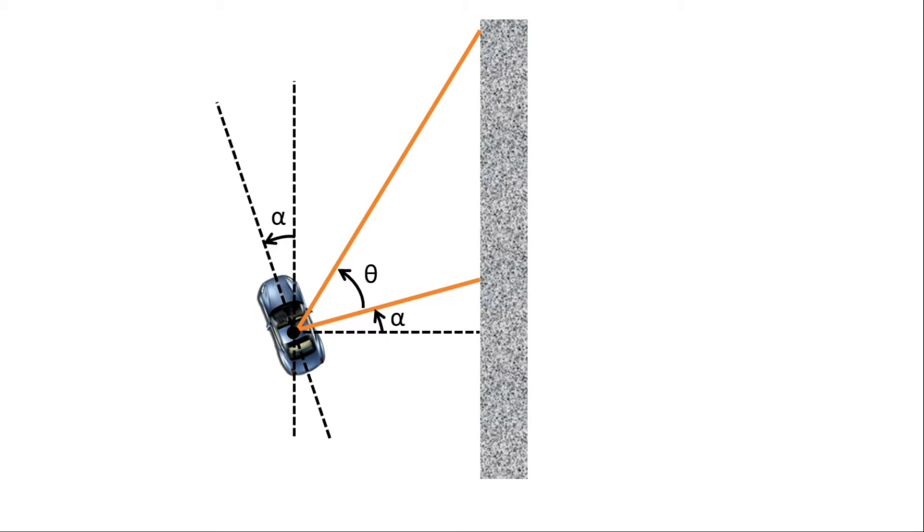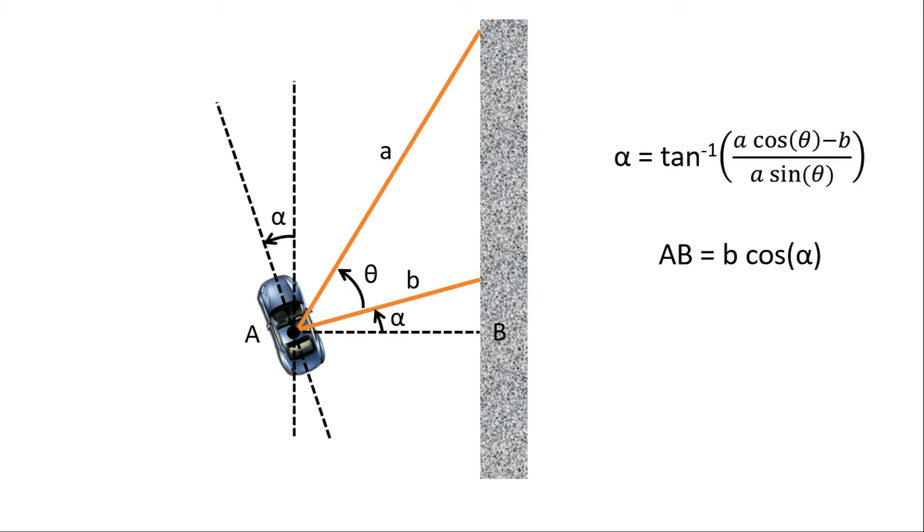Let alpha be the orientation of the car with respect to the wall. The LADAR scans are also rotated by an angle alpha. By solving the geometric problem, we can establish alpha as the tan inverse of a cos theta minus b divided by a sin theta and the distance from the wall AB as b cos alpha.